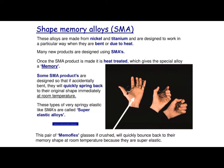Shape memory alloys are made from nickel and titanium. The really clever thing about these is that they have a memory — they can remember what shape they were in, and with the input of heat, they actually spring back to that shape. You might be thinking, well, what different applications are there for this type of material or properties? There's actually quite a few.